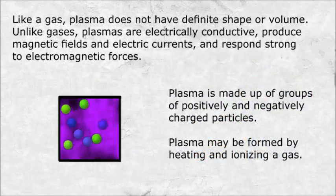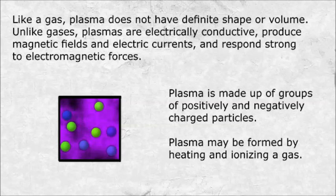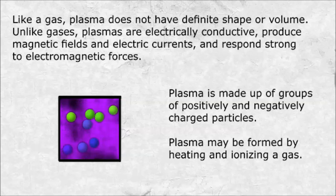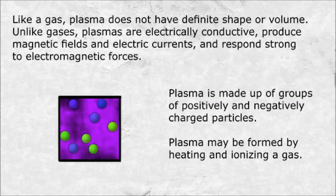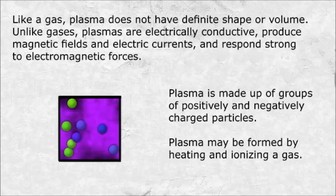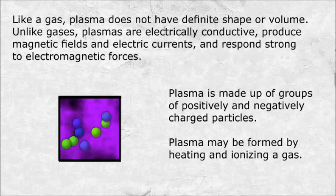Like a gas, plasma does not have a definite shape or volume. Unlike gases, plasmas are electrically conductive, produce magnetic fields and electric currents, and respond strongly to electromagnetic forces. Plasma is made up of groups of positively and negatively charged particles. Plasma may be formed by heating and ionizing a gas.